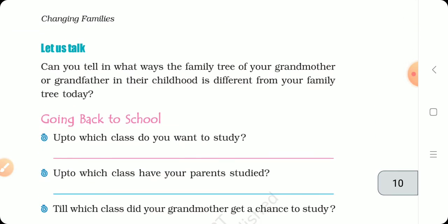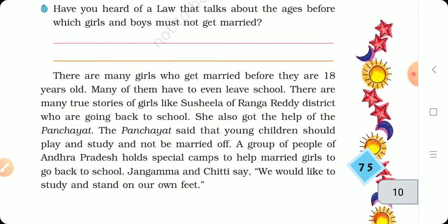There are many girls who get married before they are 18 years old. In our country, the law says that a girl must be 18 years old before she can get married. Many of them have to even leave school because of early marriage. There are true stories of girls like Sushila of Ranga Reddy District who are going back to school. She also got the help of the Panchayat, which said that young children should play and study and not be married off.